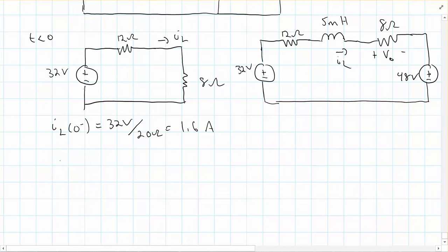So the time constant is simply L over R, which in this case would be 5 millihenrys over 20 ohms, because they're in series. So that's what tau would be.